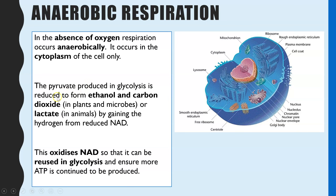It's slightly different for animals compared to plants and microbes, but what they have in common is that all three — plants, microbes, and animals — begin with glycolysis creating pyruvate. What the pyruvate is converted into differs because plants and microbes have slightly different enzymes. The main purpose is to release small amounts of ATP, but the key is to oxidize NAD so that it can be used in glycolysis again and again, allowing anaerobic respiration to continue even without oxygen.